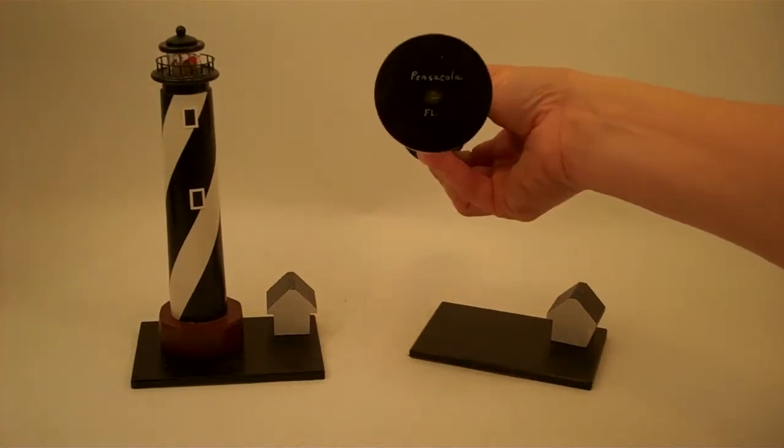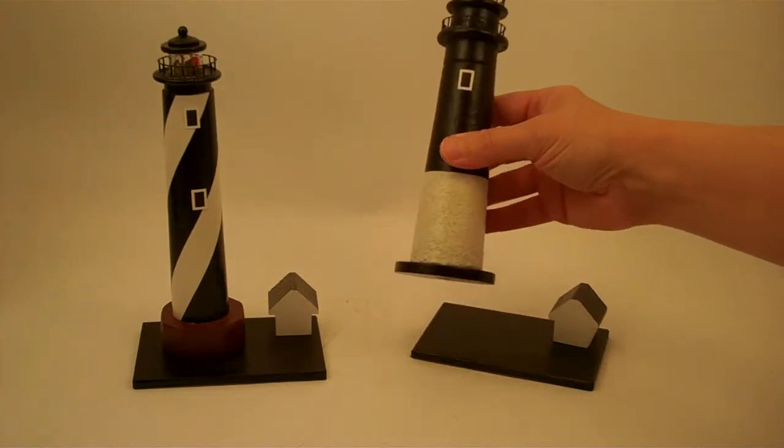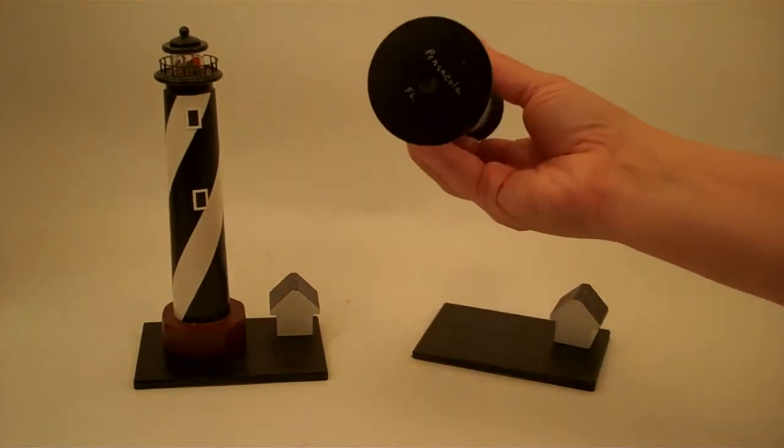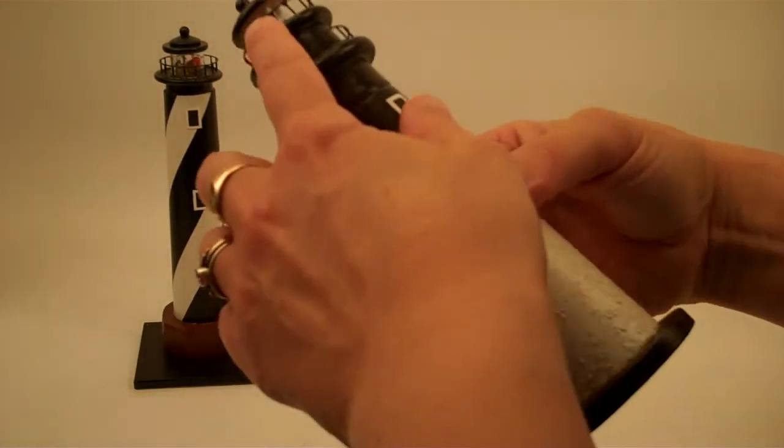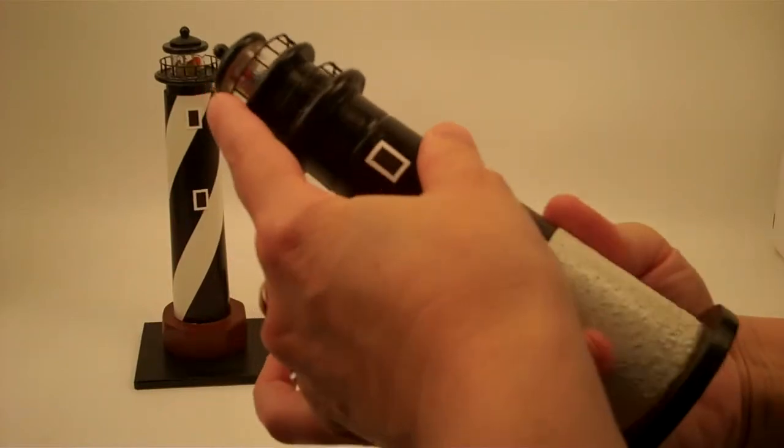Now this one is Pensacola, Florida, hand-painted to resemble the actual lighthouse at Pensacola. The eyepiece is at the bottom, and the bead chamber is where the lens of the lighthouse would actually be.